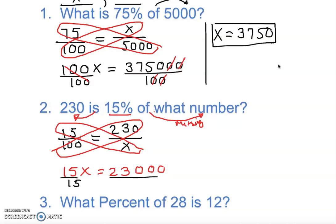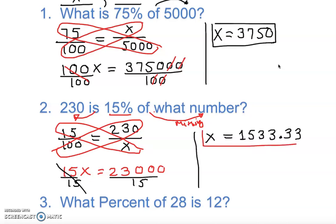We divide both sides by 15: X equals 23,000 divided by 15, which gives approximately 1,533.33. Write your answer according to how the question directs you. If it says round to the nearest whole number, write 1,533. If it asks for tenths, keep one decimal place. Follow whatever direction your homework, quiz, or professor specifies.